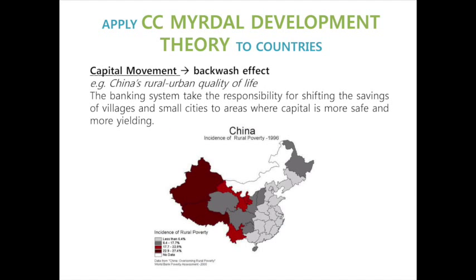As for capital movement, Myrdal sees that the banking system takes the responsibility for shifting the savings of villages and small cities to areas where capital is more safe and more yielding. This can be seen in the case study of China's rural versus urban quality of life.